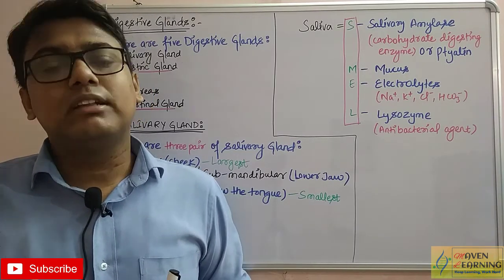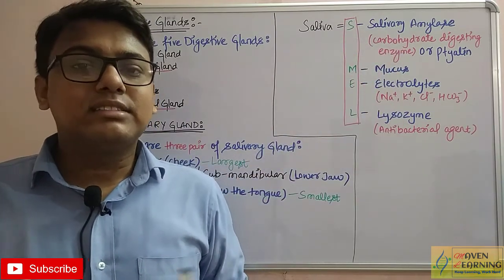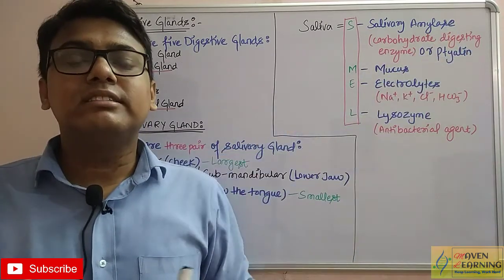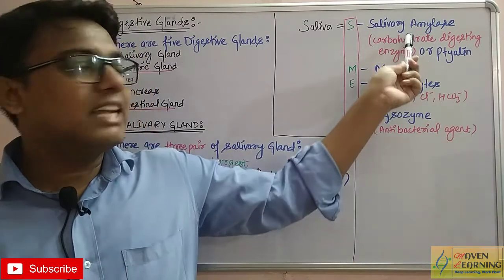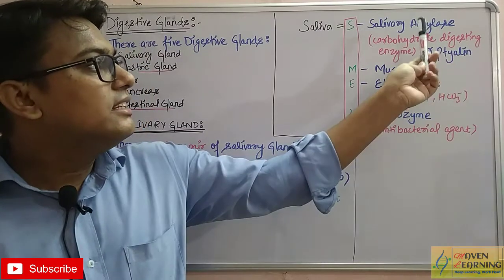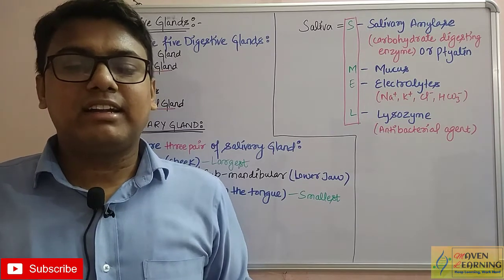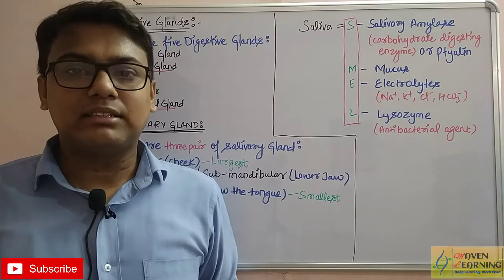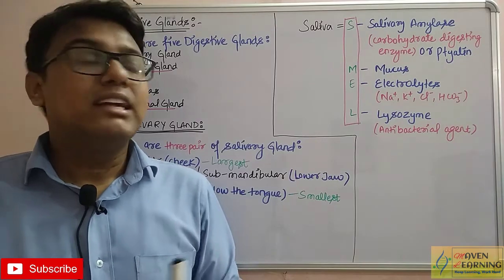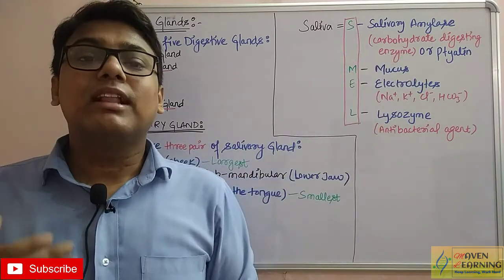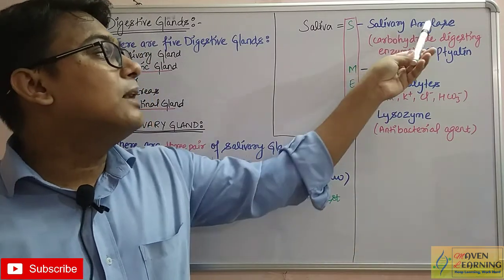These salivary glands produce saliva. Saliva mainly contains four things. First is salivary amylase — the suffix 'ase' indicates it is an enzyme, and 'amyl' relates to carbohydrate. So salivary amylase is a carbohydrate-digesting enzyme. It is also called ptyalin.